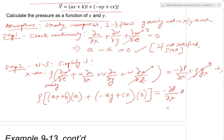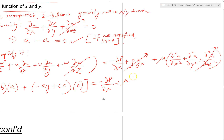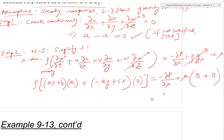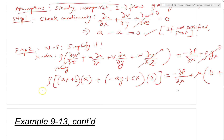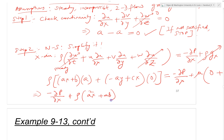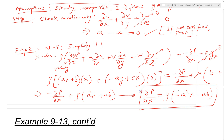After simplifying, we get: minus dp/dx plus mu times (d²u/dx² + d²u/dy²) equals zero. This simplifies to dp/dx equals rho times (minus a²x minus ab). So we have the differential form of pressure in the X component.